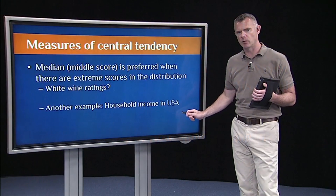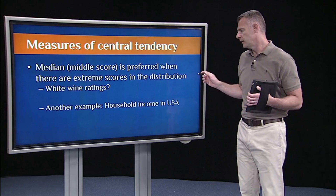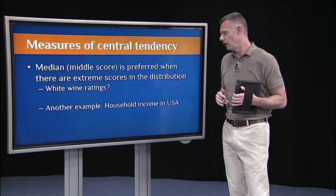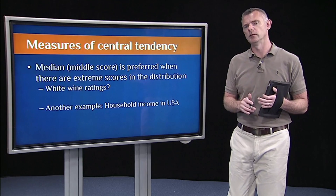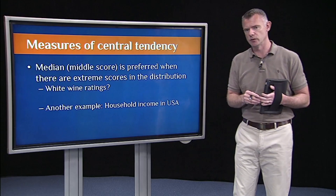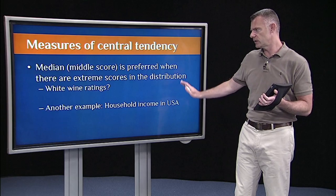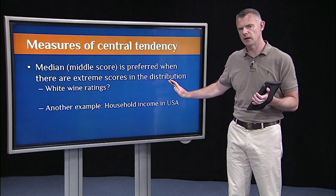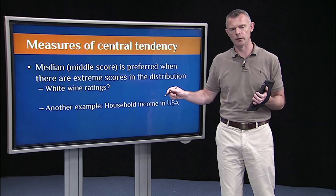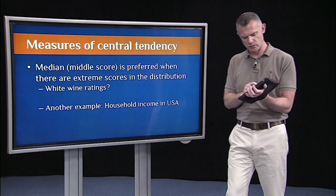A classic example right now in the US and many modern countries is household income. Household income, particularly in the US and in Brazil, is really not normally distributed — there's a real positive skew in the income distributions. So you'll often see median salary or median household income reported in the news rather than mean or average salary, and that's because those distributions are skewed.